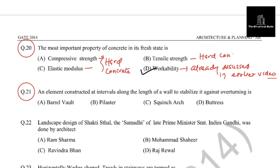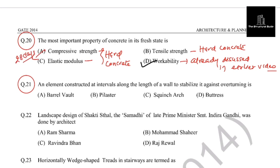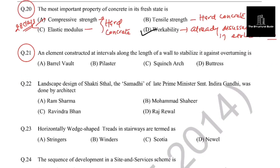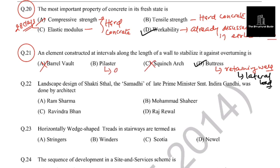The next question: an element constructed at intervals along the length of a wall to stabilize it against overturning is a buttress. Buttress is widely used in retaining walls, which are very prone to lateral loads — the buttress provides stability against overturning. Barrel wall and squinch arch are not related to wall stabilization. Plaster is an architectural element used only for ornamentation.